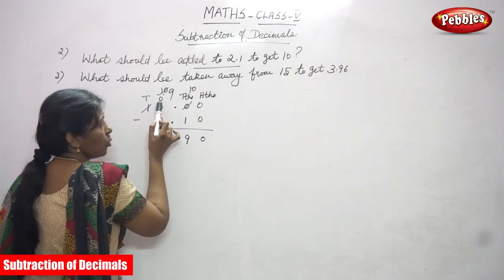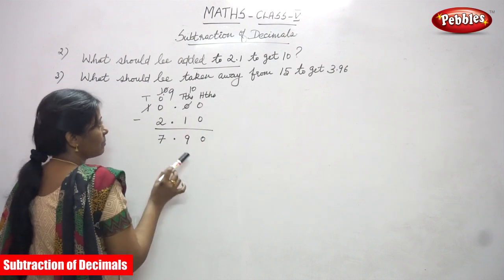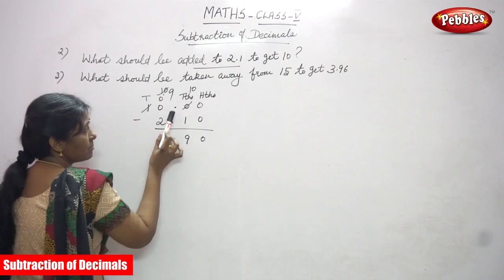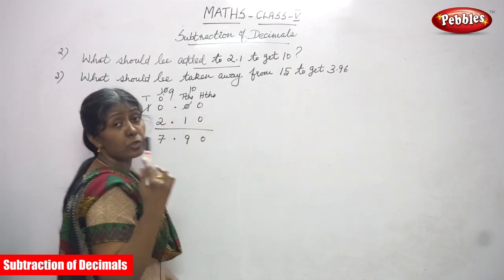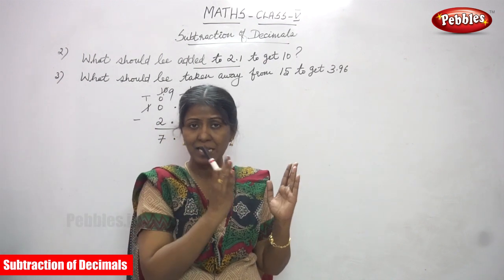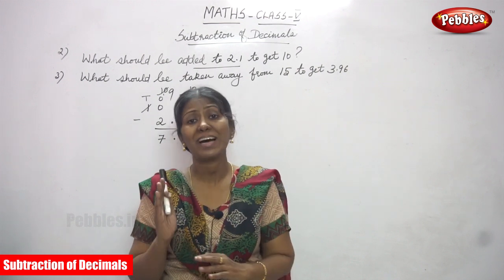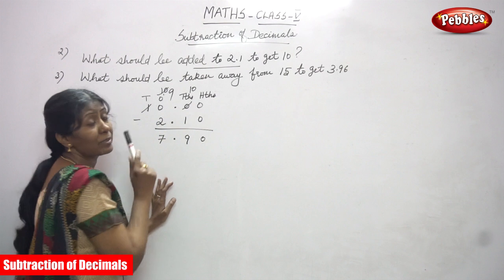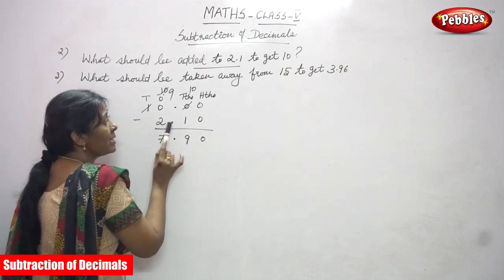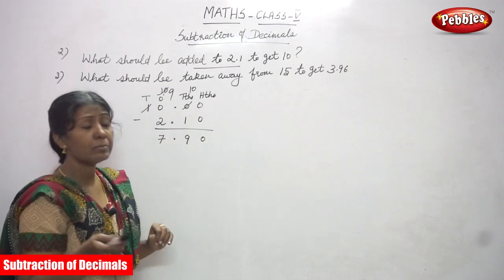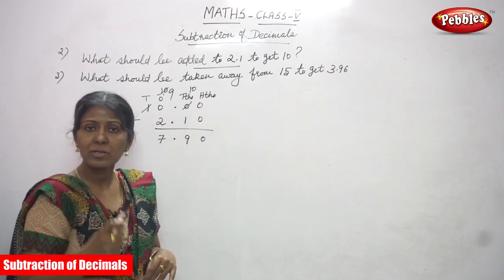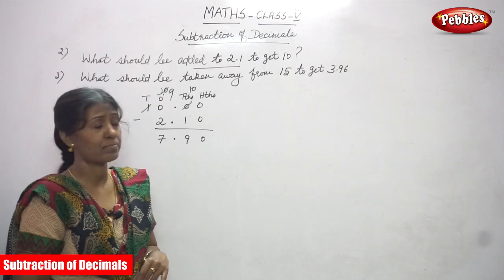10: I have written it as 10.00. 0 in 10 means 0 in the 1's place and 1 in the 10's place. Then put a point. Then the 10ths and 100ths places have no number, so I have written double zeros — one 0 for the 10ths place and another 0 for the 100ths place. Now, I have to subtract 2.1. That is the number 2.1: 2 in the 1's place — this is the whole part. Then put a point. After the point we call it the decimal part. So, 1 in the 10ths place and there is no number in the 100ths place, so I have written 0 in the 100ths place.